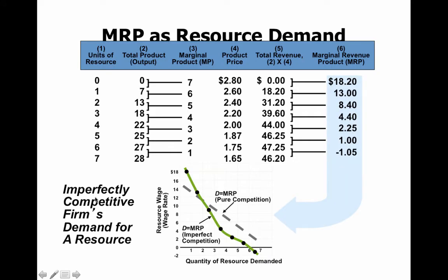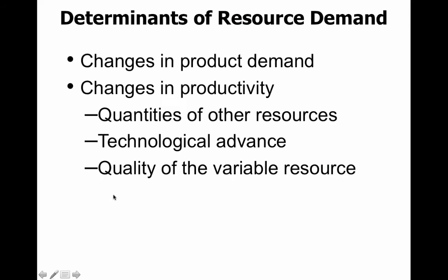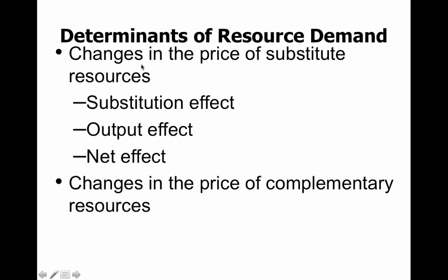There are determinants of resource demand, just like determinants of supply and demand. First, a change in demand for the product — if people want econ classes more, the derived demand for econ teachers increases. Second, changes in productivity — if I become a more productive teacher through better techniques or technology, like giving everyone an iPad so everyone learns better, that increases productivity. Third, changes in the price of a substitute resource — if the EconoBot 2000 becomes more expensive, people will be less interested in buying it and more interested in hiring regular econ teachers.